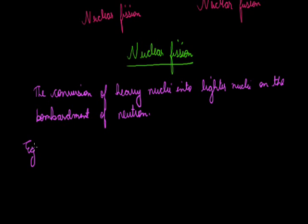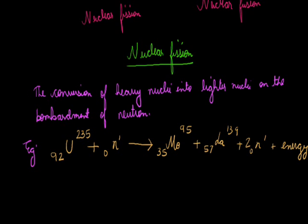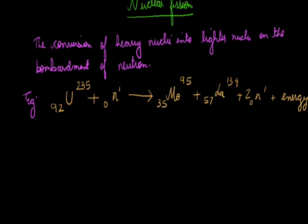An example of nuclear fission: uranium-235, when bombarded with a neutron, breaks into two lighter nuclei. It forms molybdenum with mass number 95, plus lanthanum with mass number 139, accompanied by two neutrons and a large amount of energy. This is the breaking of a heavy nucleus — uranium — into two lighter nuclei — molybdenum and lanthanum — and this process is known as nuclear fission.